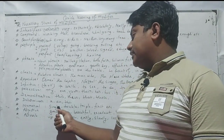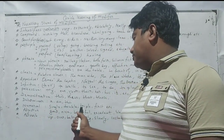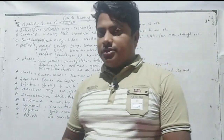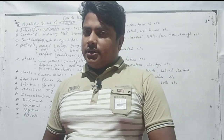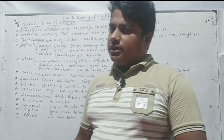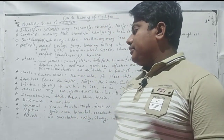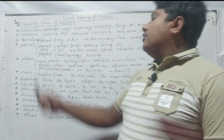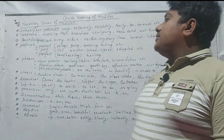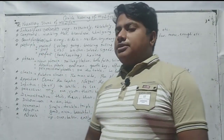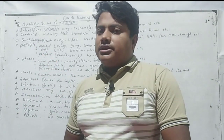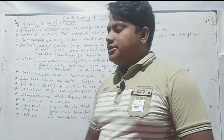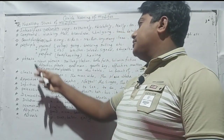Countable quantifiers include single, double, triple, first — these are calculable. Their regular name is numeral. After quantifiers, the next component that we need in modifiers is participle.